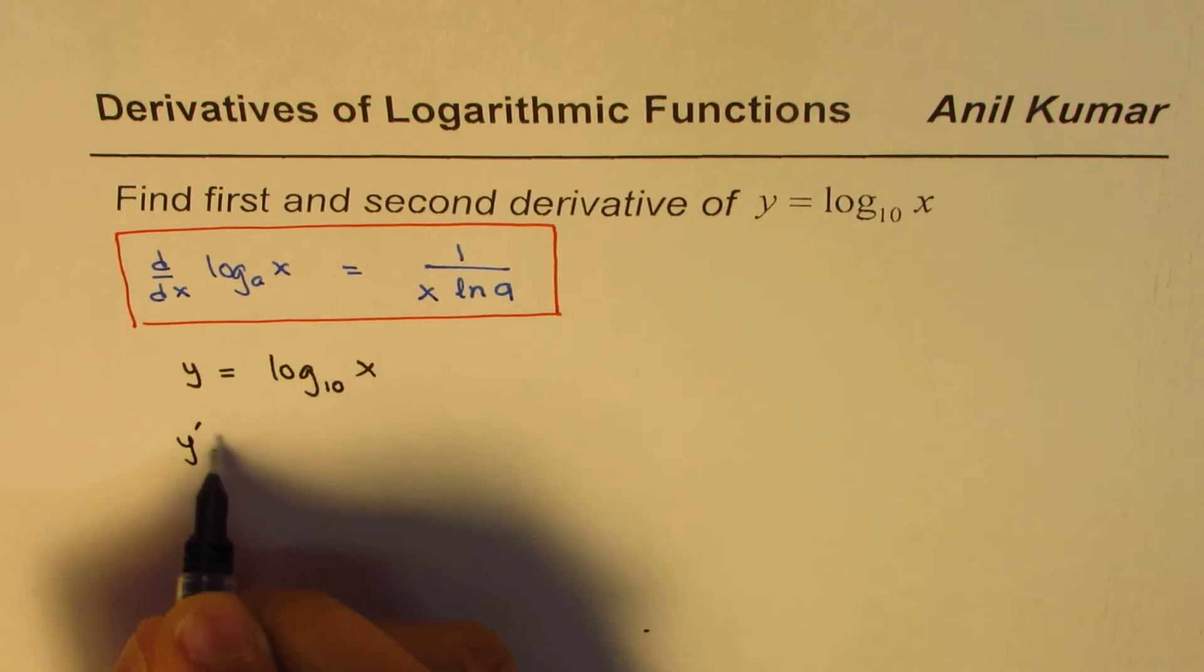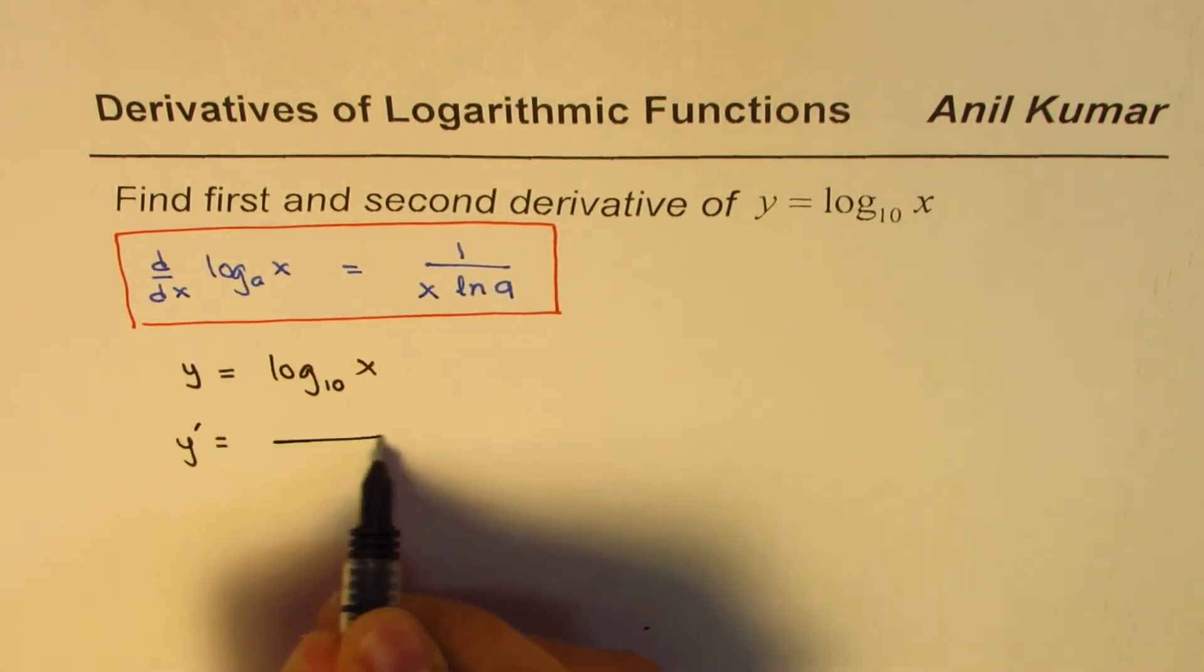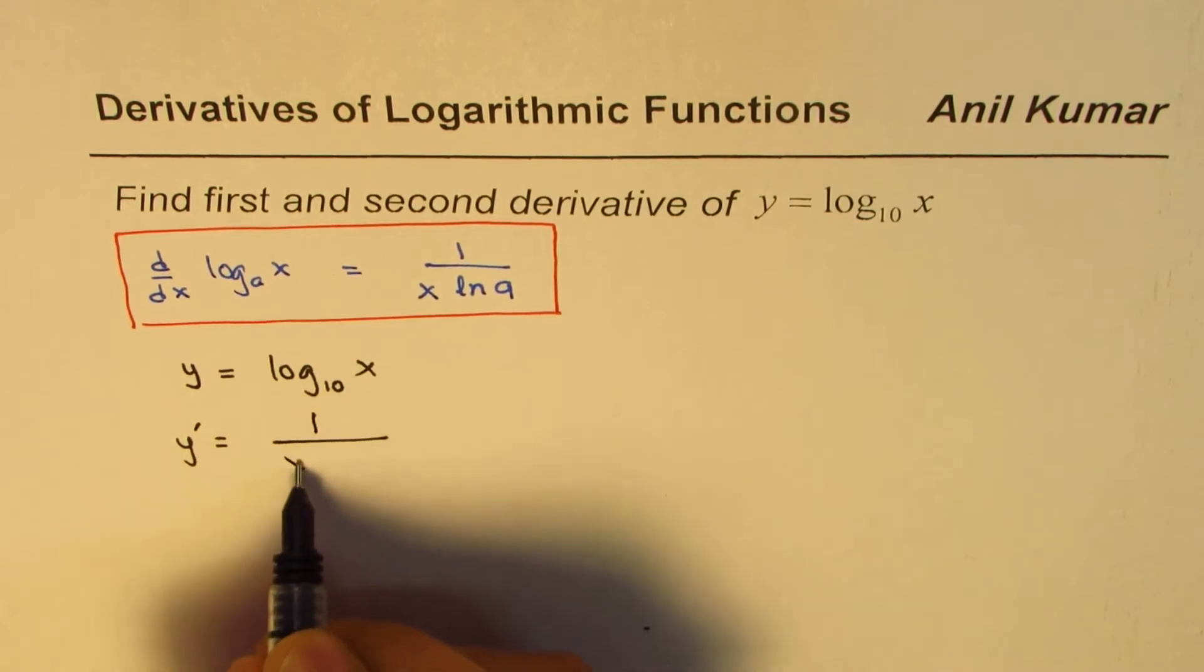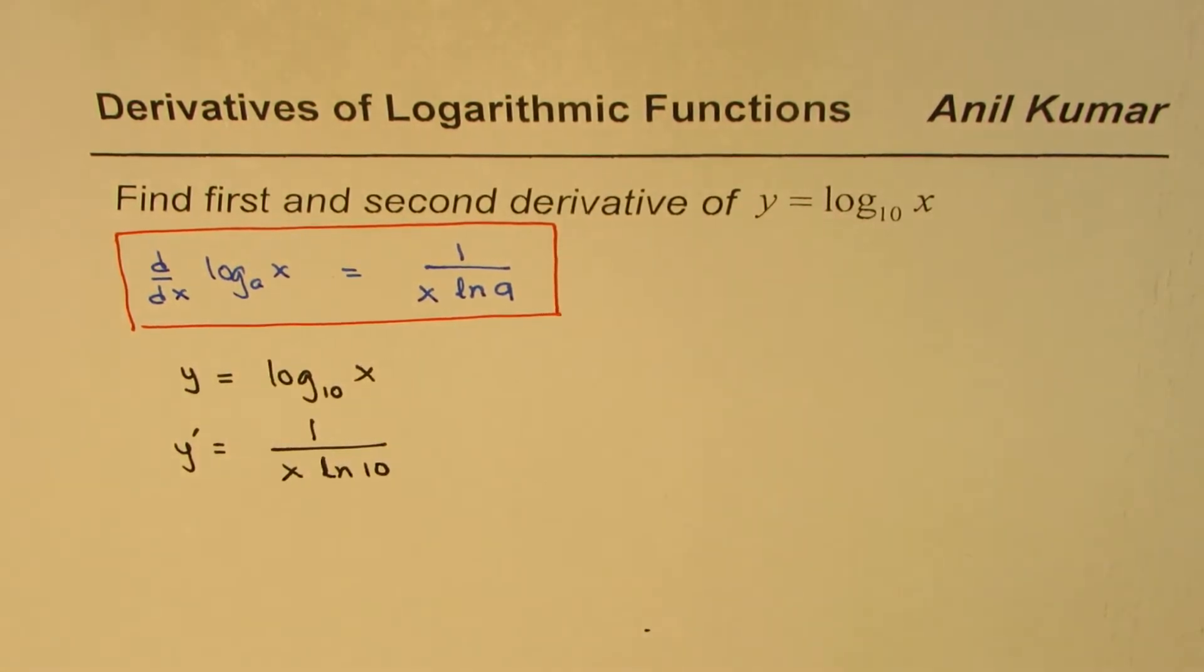So the derivative, the first derivative, is the straightforward formula 1 over x ln a. a is 10 for us, so ln 10. So that is how you get the first derivative of this function.